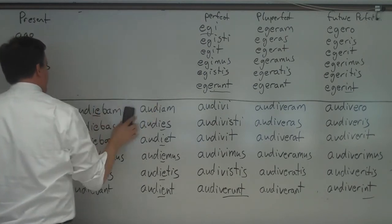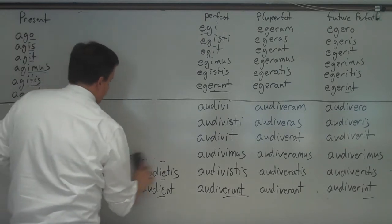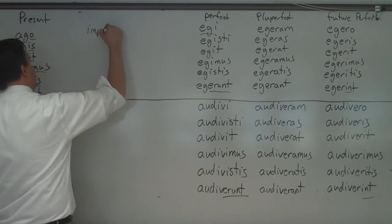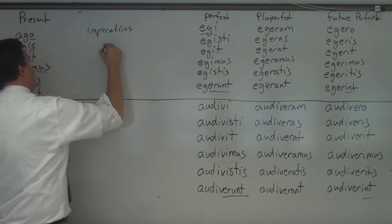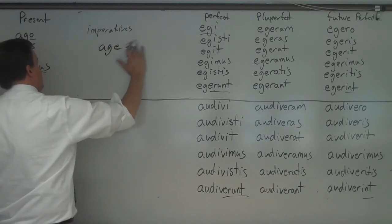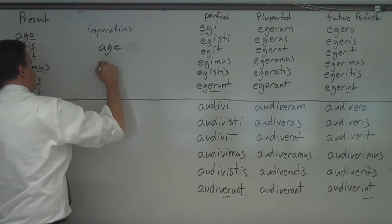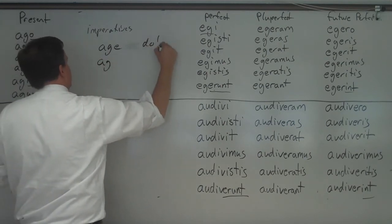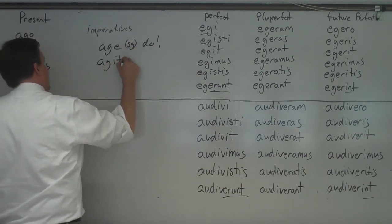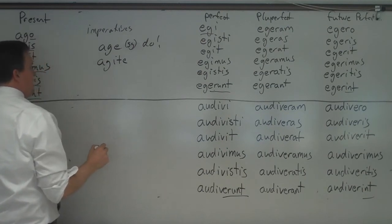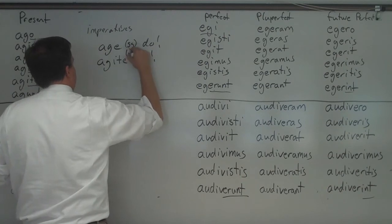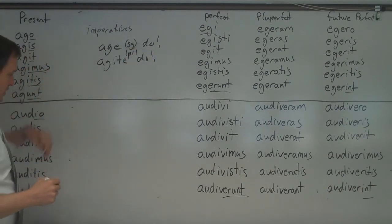If you are doing the imperatives — I always forget about the imperatives — for the third conjugation: you take the second principal part, the infinitive, and remove the -re, and you get age. That would be 'do' for the singular. Then you add -ite, so: agite, for 'do' in the plural.